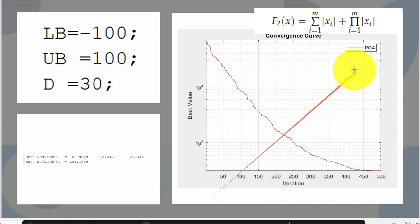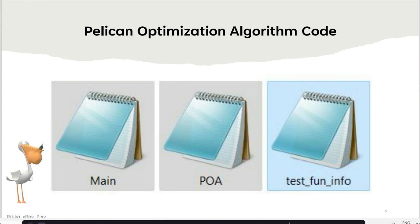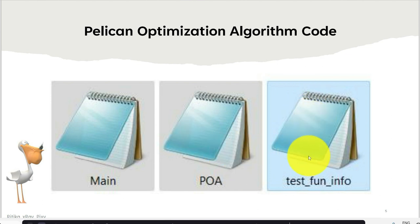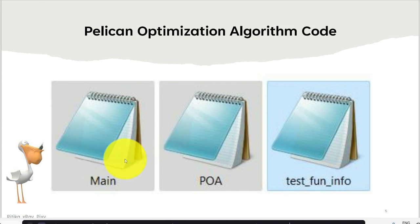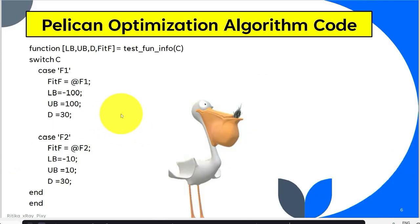Now we will try to understand the code implementation for this algorithm. We will create three files: one for the test function information, where we will provide all the important details for the test functions; one for the Pelican Optimization Algorithm, where we will apply the algorithm on the test function; and the main file to run the code. First, we will create the test function file, where we will provide all the important details related to the test function.